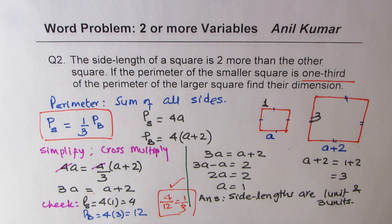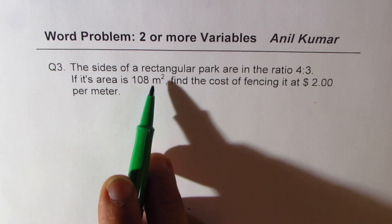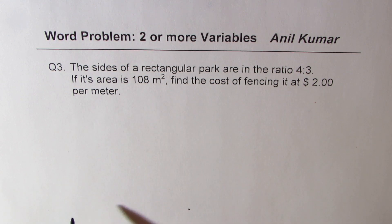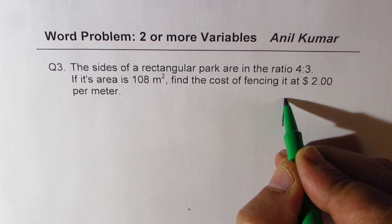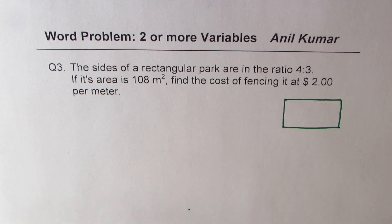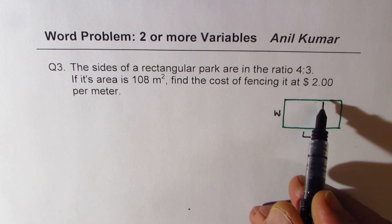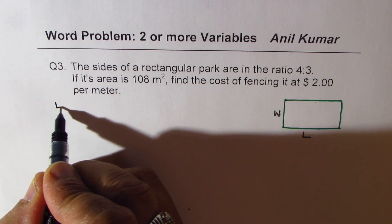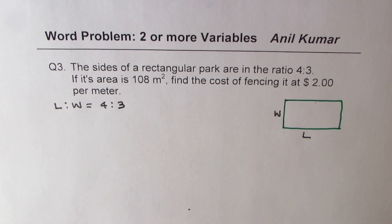Question number three: the sides of a rectangular park are in the ratio of four is to three. If its area is 108 meter squared, find the cost of fencing at $2 per meter. Fencing means perimeter. First step: let us sketch a rectangle. We have to define the dimensions — let's say this is length and this is width.